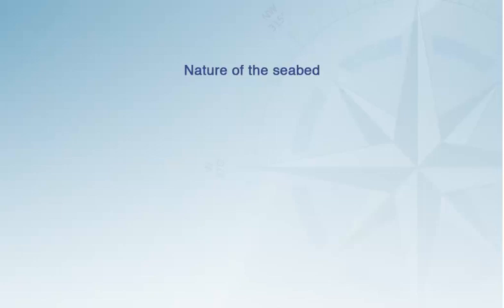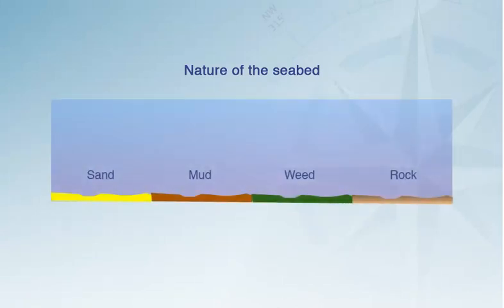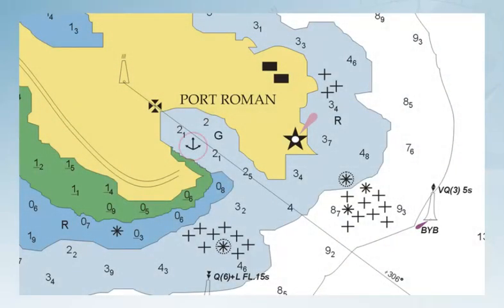The nature of the seabed also needs to be considered. The chart will tell us what to expect. This symbol means a sandy bottom, normally good holding for an anchor, as is mud. To be avoided are weedy patches and craggy rock. Many anchorages are marked for us on the chart, but the symbol doesn't mean that this place is suitable in all wind strengths and directions. We need to take into account the prevailing conditions.